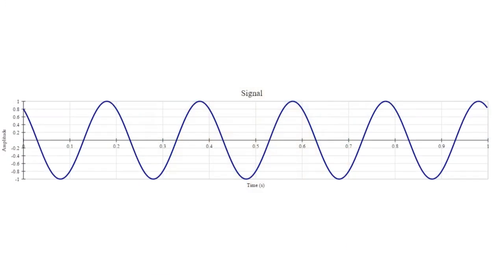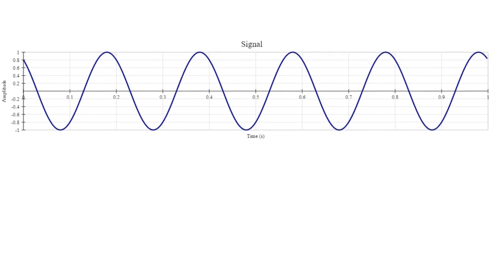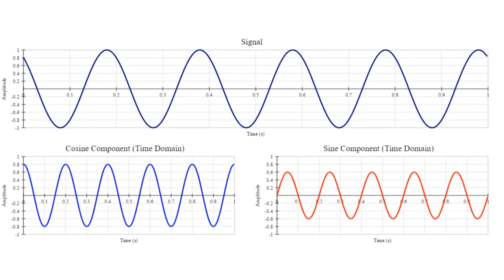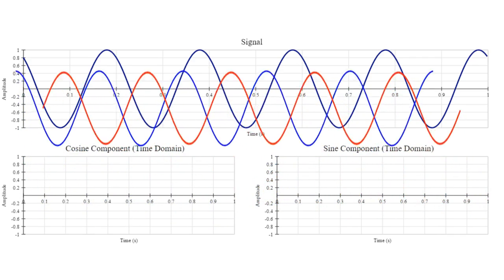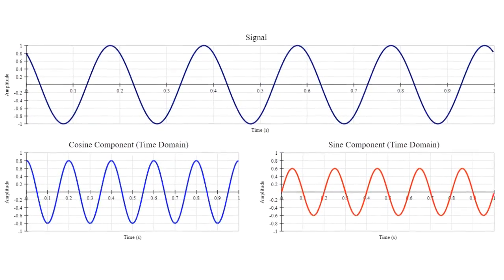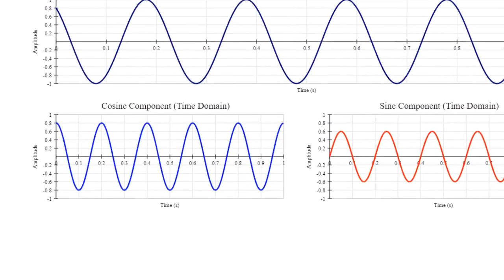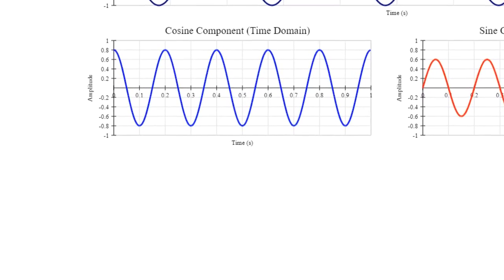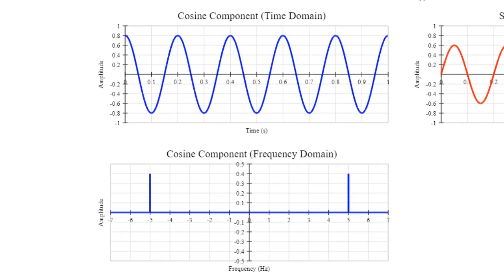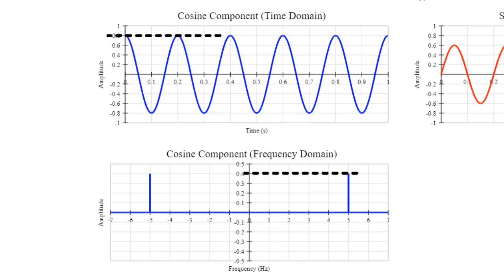Take this simple 5 Hz sinusoid as an example. If I break it down into its component cosine and sine waves, they look like this. They both have a frequency of 5 Hz, but their amplitudes are such that when added together, they produce the 5 Hz sinusoid we started with. If I perform a Fourier transform on the signal to transfer it into the frequency domain, the cosine component looks like this. Here's the peak at 5 Hz. But whereas the amplitude of the cosine wave in the time domain is 0.8, the amplitude in the frequency domain is only 0.4. And there's another similar peak at minus 5 Hz.